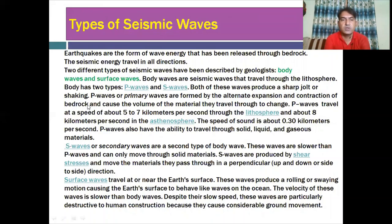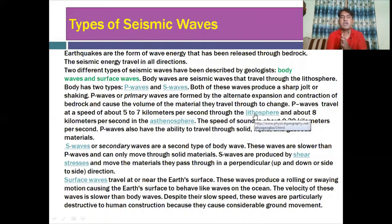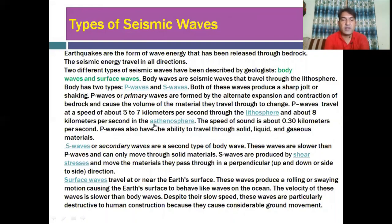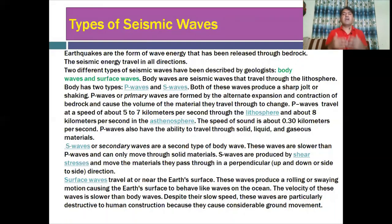Both these waves produce sharp jolts or shaking. P waves, or primary waves, are formed by the alternate expansion and contraction of bedrock and cause the volume of material they travel through to change. P waves travel at a speed of 5 to 7 km per second through the lithosphere, and about 8 km per second in the asthenosphere. P waves also have the ability to travel through solid, liquid, and gaseous materials.